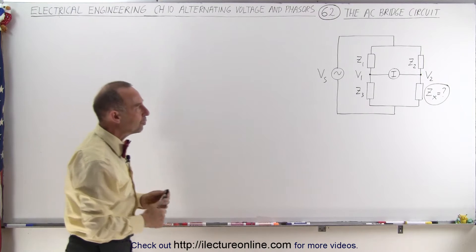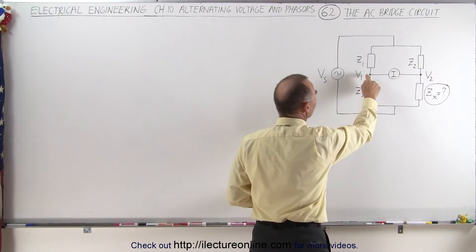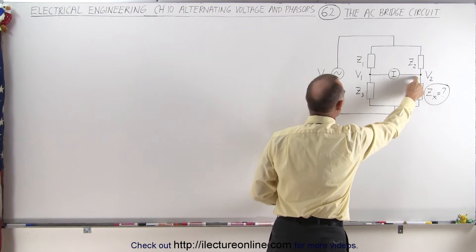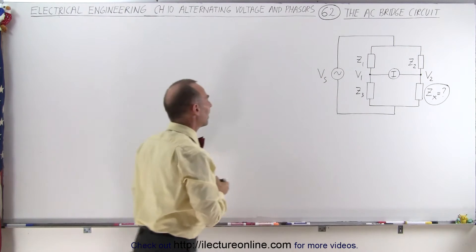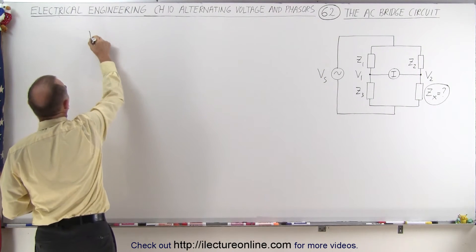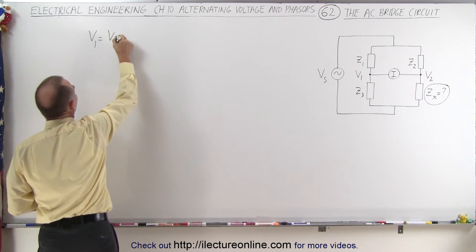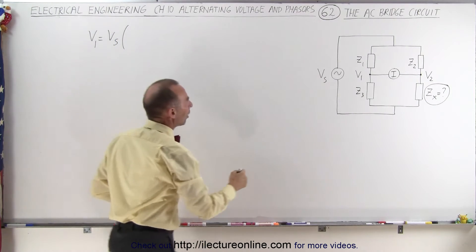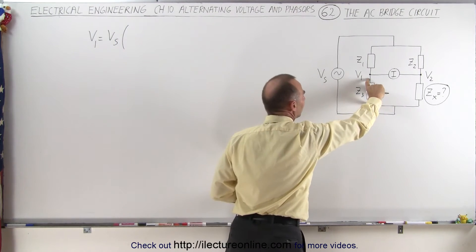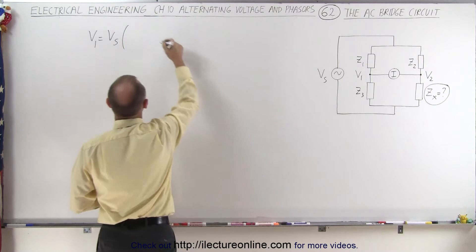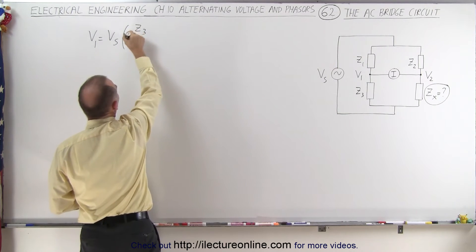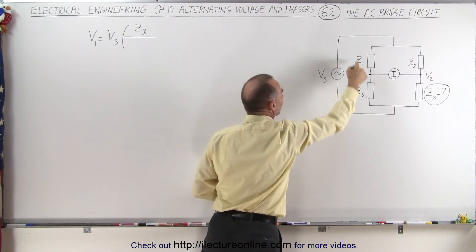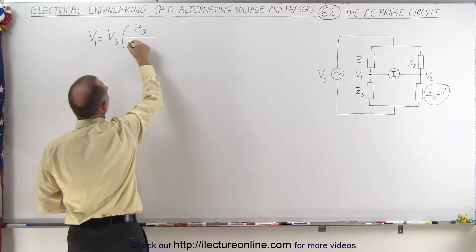We're going to find the voltage V1 and V2 in terms of Vs. V1 equals Vs times the ratio of the voltage drop across Z3—that's the magnitude of Z3 divided by the sum of impedances along this path, which is Z1 plus Z3.